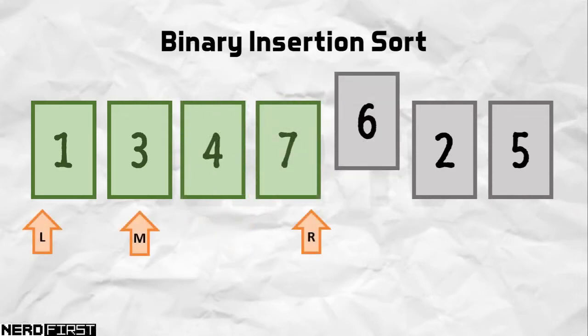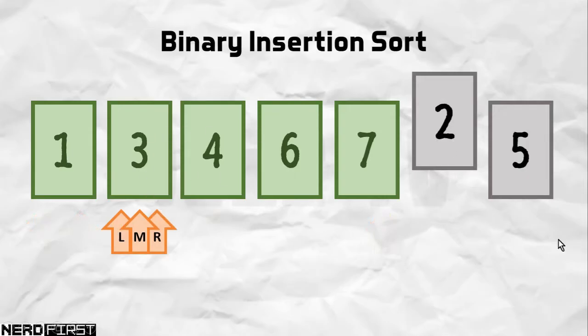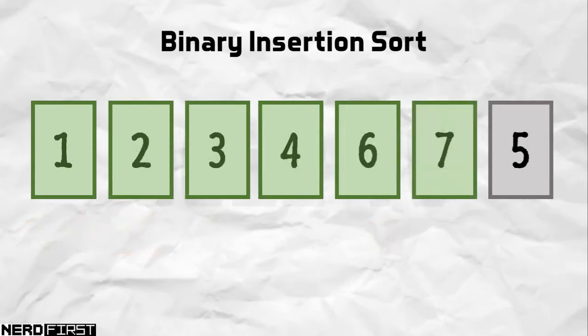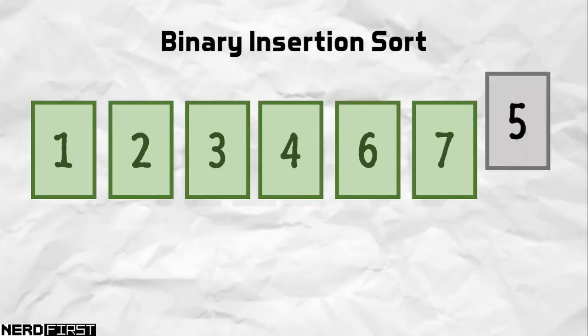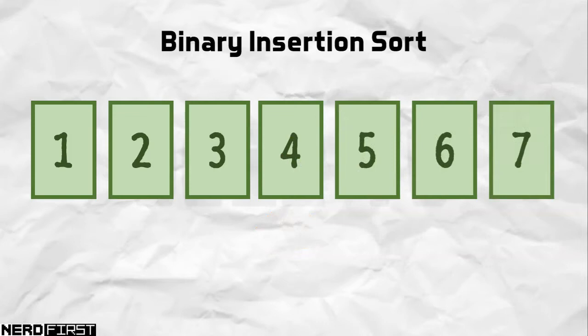You get the idea. We rinse and repeat with 6. We end up at 7. 6 is less than 7, so it's inserted on the left. 2. Again, binary search, and what happens is we end up at 3. 2 is less than 3, so it's inserted on its left. 5. Again, we do our binary search, and this time we converge on 4. Because 5 is greater than 4, we insert it on the right of that. And there you go, that is binary insertion sort in a nutshell.